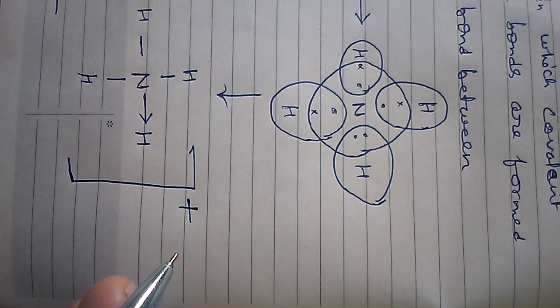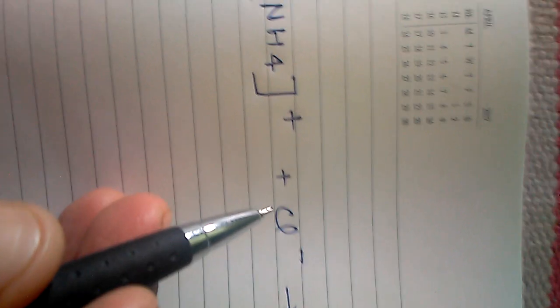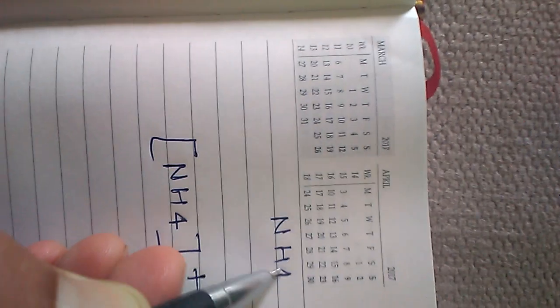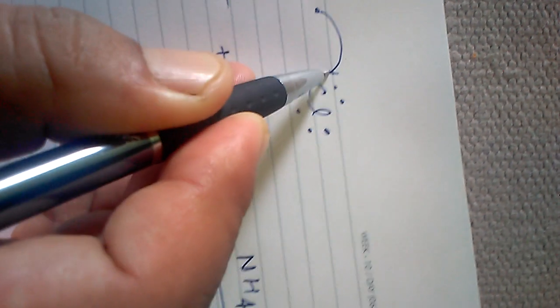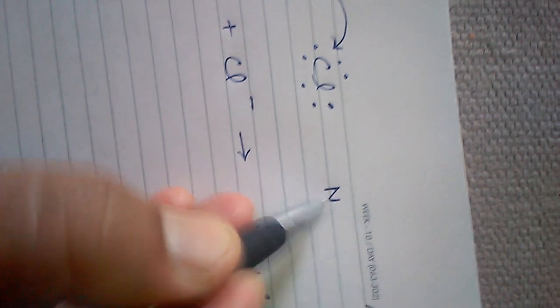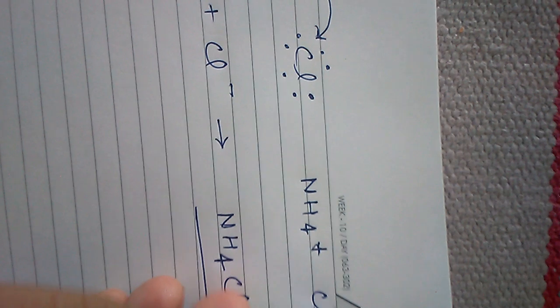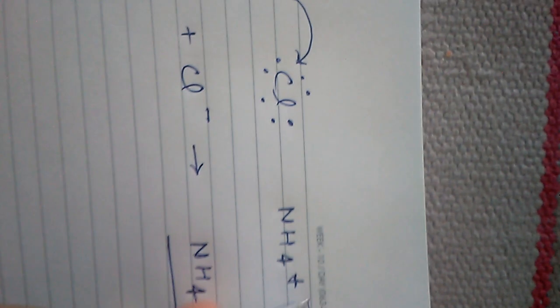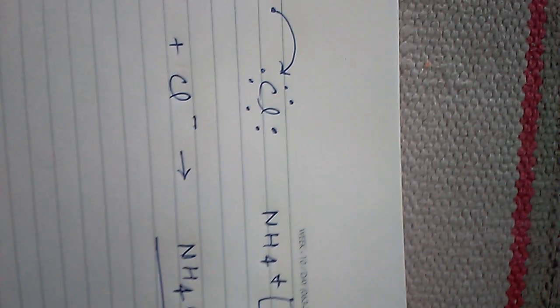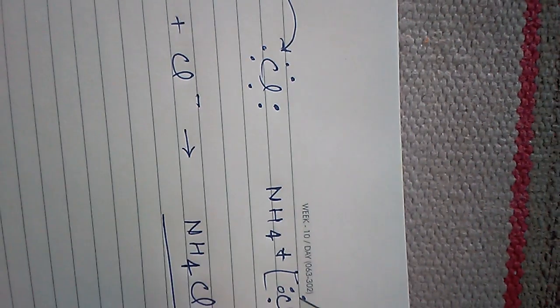So now NH₄⁺ exists as the ammonium cation with a positive charge, and it can combine with Cl⁻. Cl⁻ means chloride ion. You can see that NH₄ donates or transfers one electron to Cl — NH₄ then becomes NH₄⁺ with a positive charge, and Cl now has eight electrons and carries one minus charge.